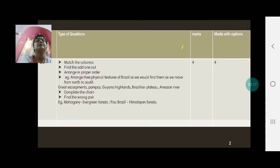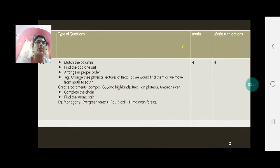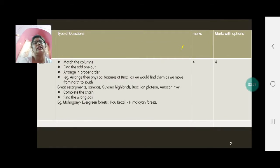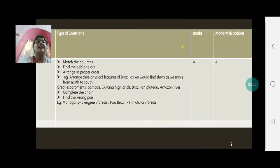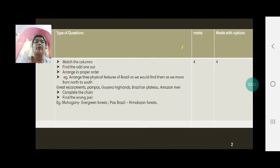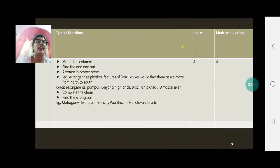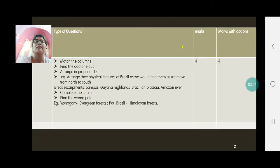So that's match the columns. If there are 4 for 4 marks or it could be 2 match the columns. There could be 2 find the odd ones or there could be 4 find the odd ones only. It all depends on the paper setters. Find the odd one, pick up the odd one, give the heading. I would say write the heading, find the odd one and number 1 suppose. Whatever is the odd one, write the answer, the odd one there. Then, arrange in proper order.